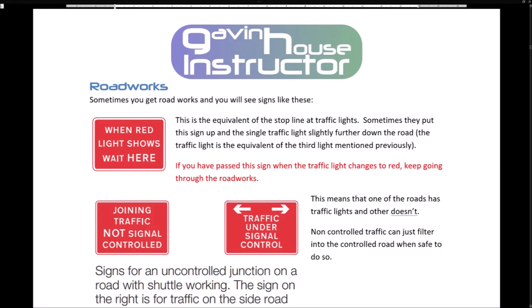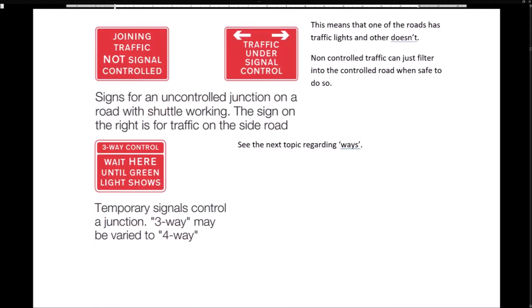Sometimes you get road works and will see signs like these. This is the equivalent of the stop line at traffic lights. Sometimes they put this sign up and a single traffic light slightly further down the road — the traffic light is the equivalent of the third light mentioned previously. If you have passed this sign when the traffic light changes to red, keep going through the road works. This means that one of the roads has traffic lights and the other doesn't — non-controlled traffic can just filter into the controlled road when safe to do so.